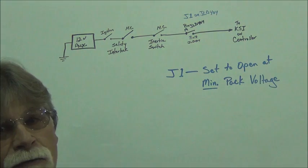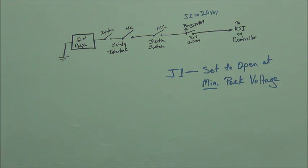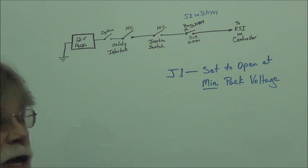So all these are in series going to something that controls your controller. In most cases, it would be your KSI, your key switch interface. And so when that doesn't have 12 volts, the controller turns off.